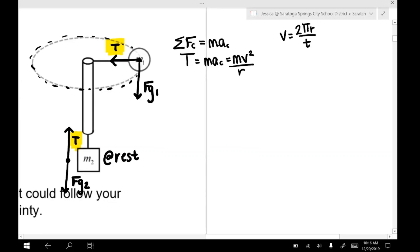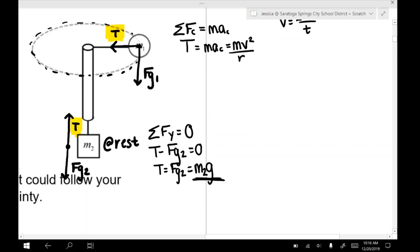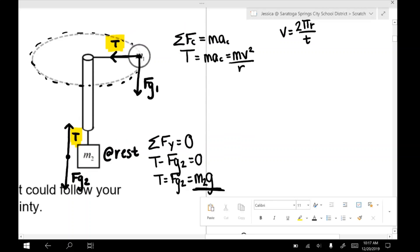Okay, so now for mass 2, we have only forces acting in the Y direction. And because M2 is at rest, M2 has a net force of zero. So that means the tension minus FG2 is going to equal zero. So that tells us the tension has to equal FG2 or M2G. So really, even though it's the tension causing M1 to move in a circle, that tension comes from the weight of the hanging block. So if we change the weight of that hanging block, we're going to be able to change the tension, which will change how the mass 1 moves in a circle.